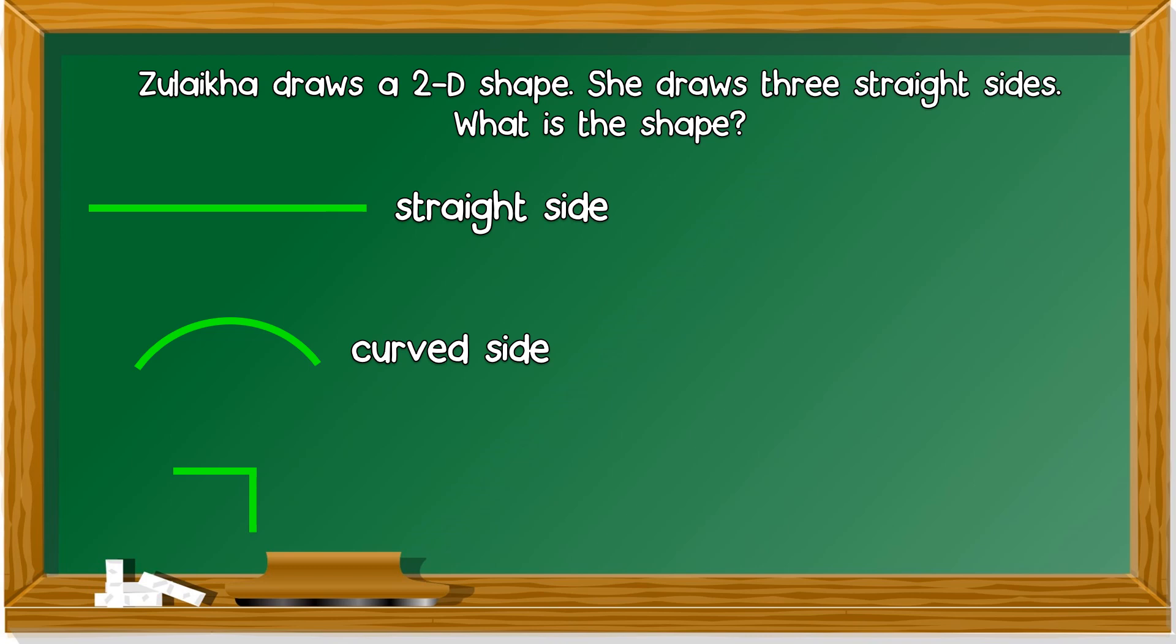Another one - this is a corner. So, Zulaika draws a 2D shape with 3 straight sides.